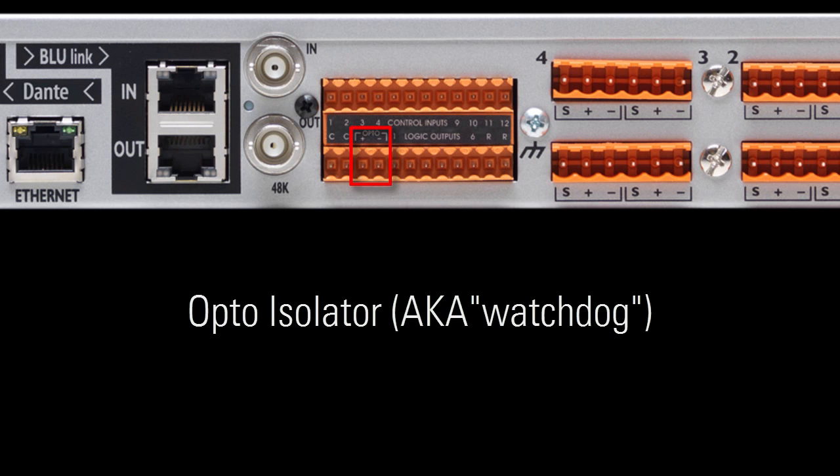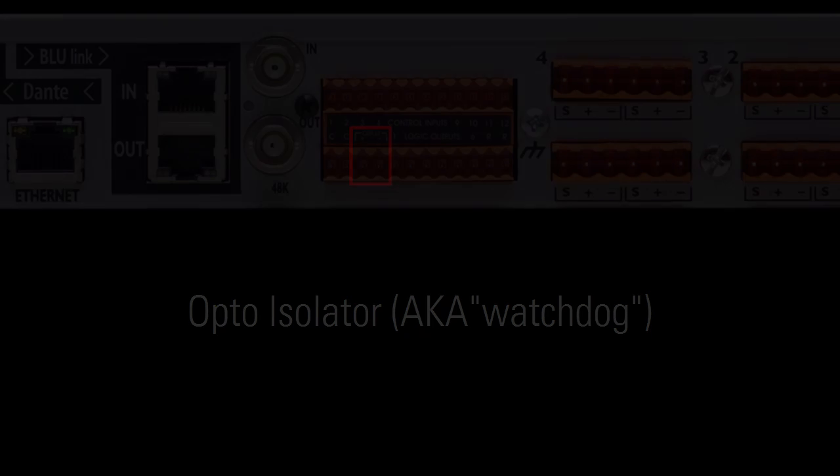The opto-isolator is a non-programmable pair of pins which conduct when the device is powered and functioning normally, otherwise it gets cut off. This is useful for high-level fault monitoring of the device.